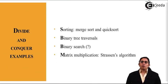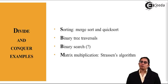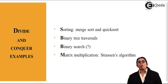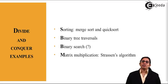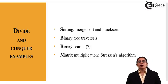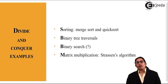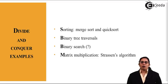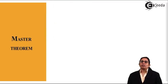Examples of divide and conquer include sorting — specifically merge sort and quick sort, which we will explain in future sessions. Another example is binary tree traversal, then binary search, and finally matrix multiplication. These are a few examples taken to easily explain what divide and conquer strategy is.